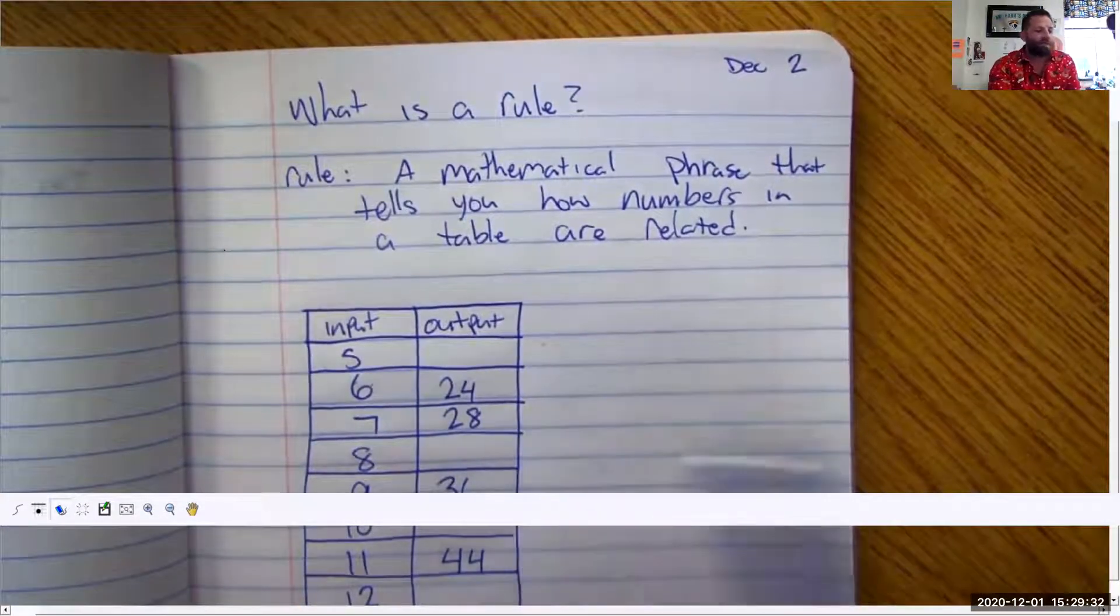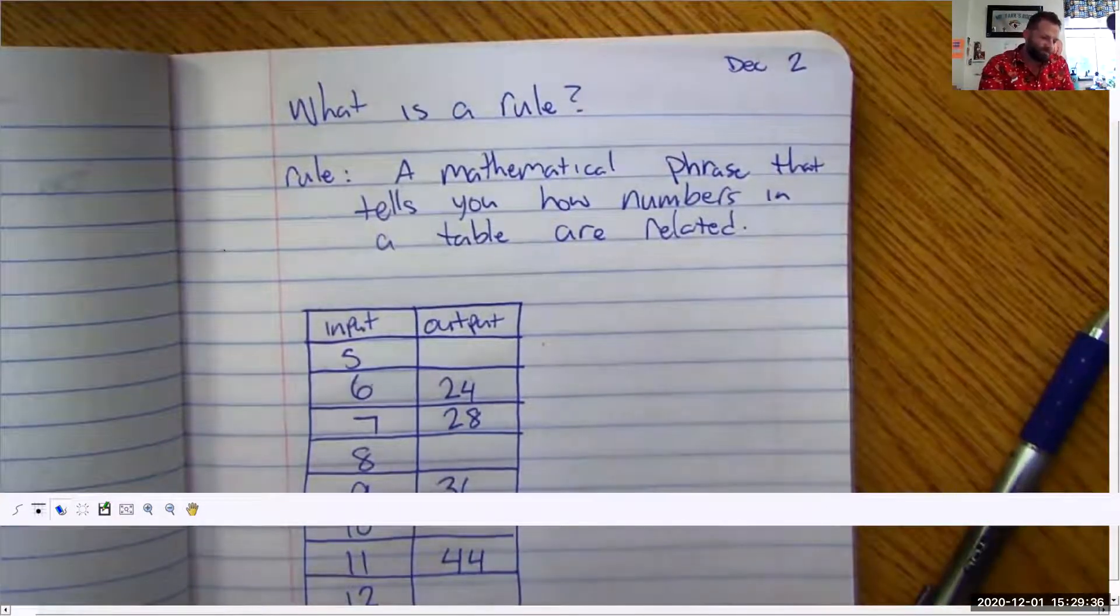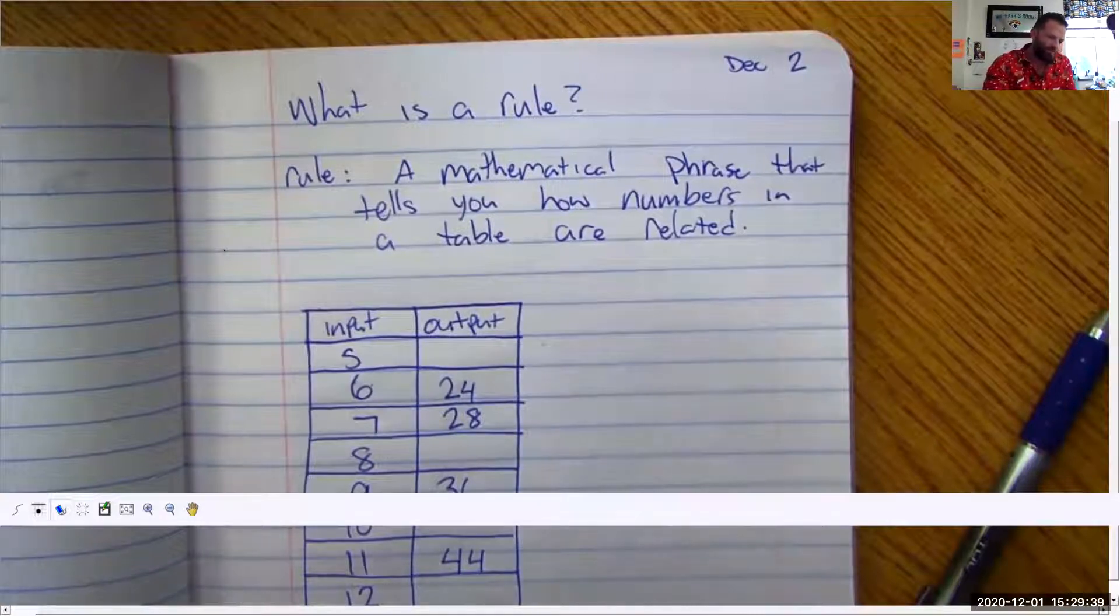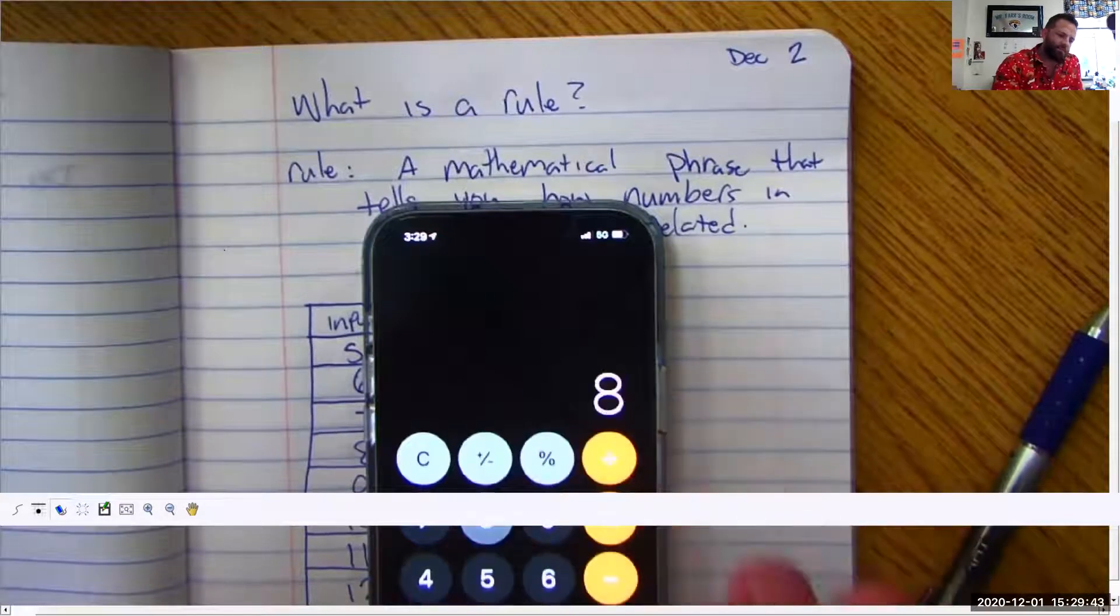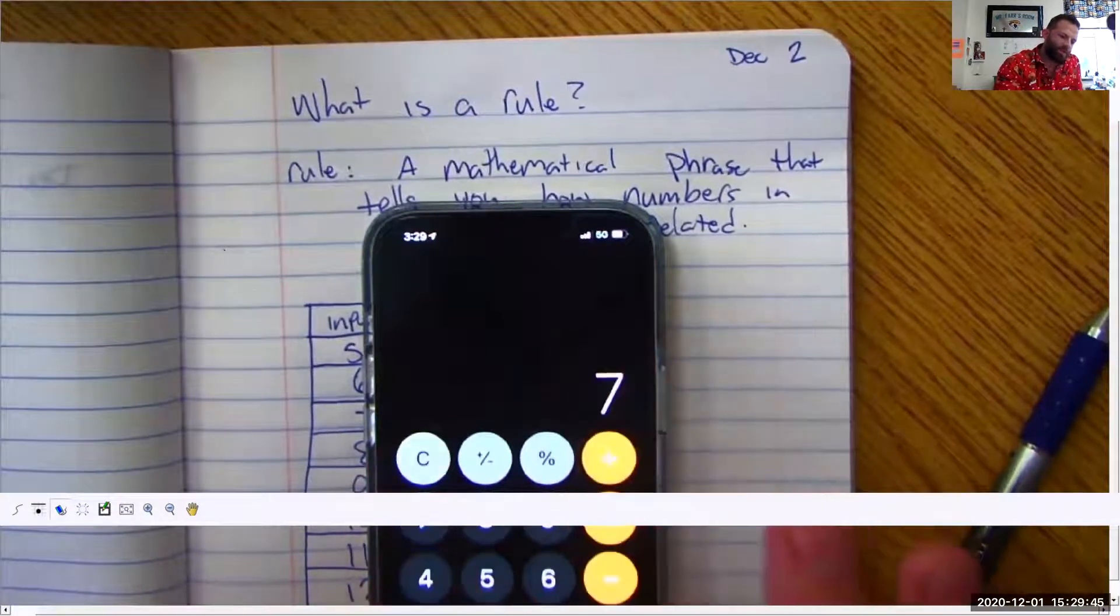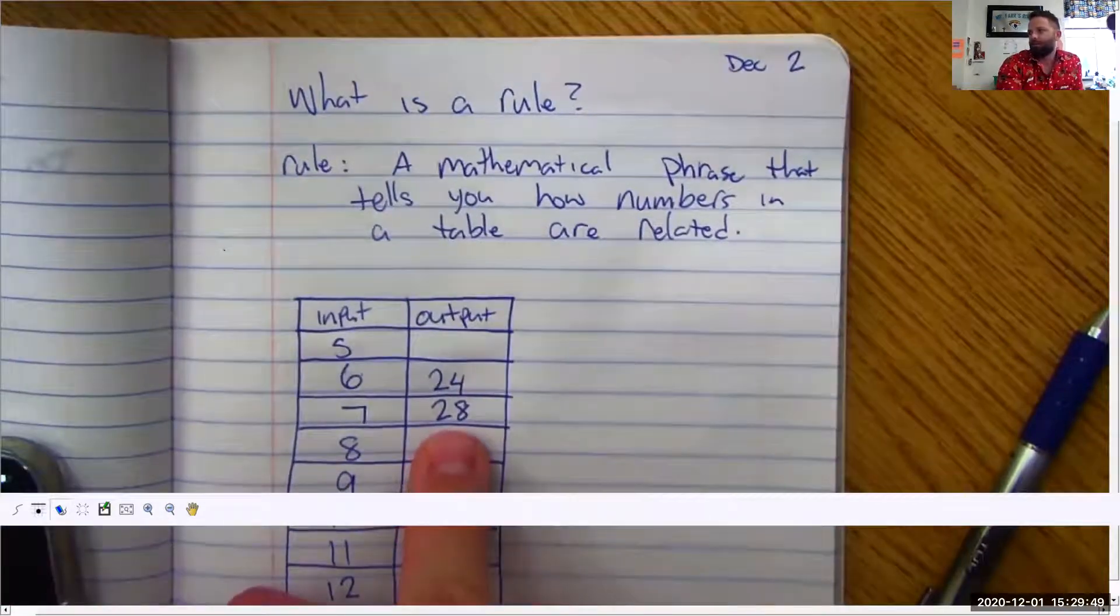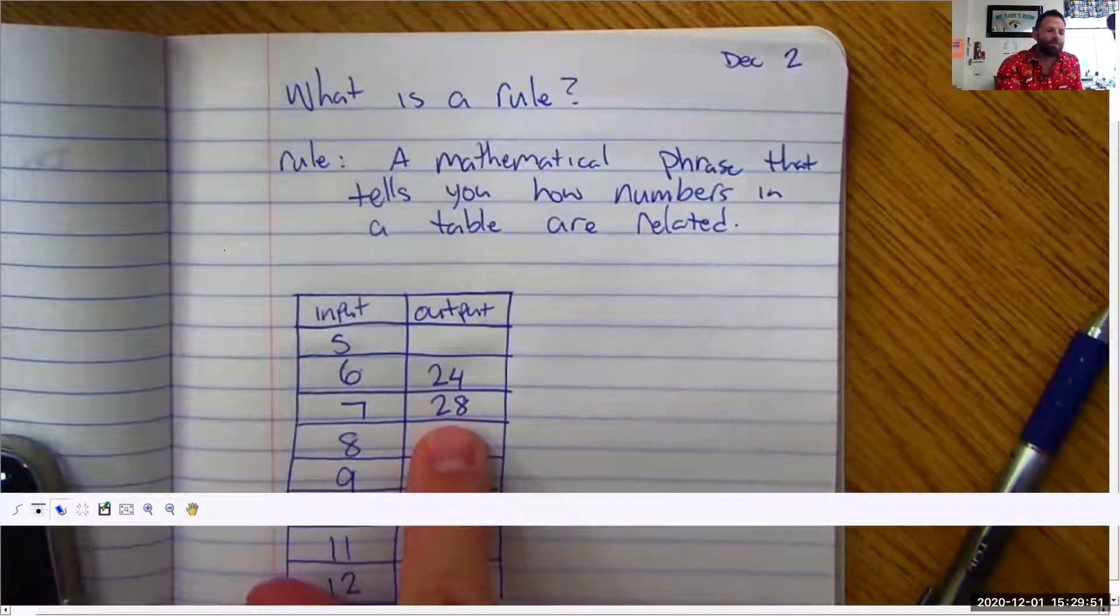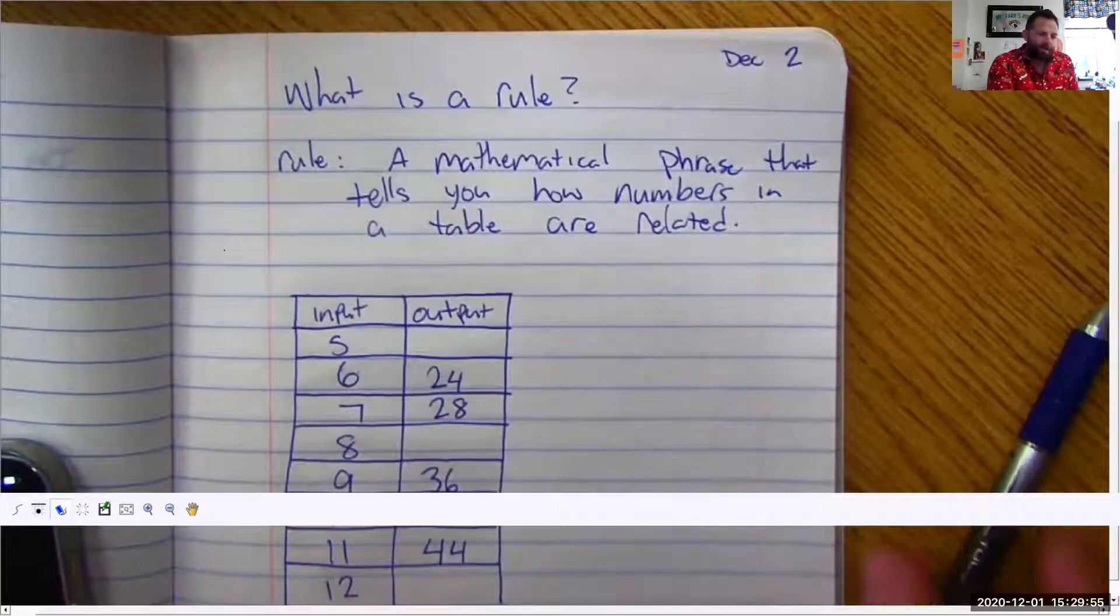Now if I do seven plus eighteen for simplicity sakes we'll pull up the phone. Let's see. Here we go. Seven plus eighteen. Nope. Seven plus eighteen equals twenty-five. Well that's not going to work. Seven plus eighteen is not going to be twenty-five so adding eighteen to it is not going to work. Okay back to the drawing board.